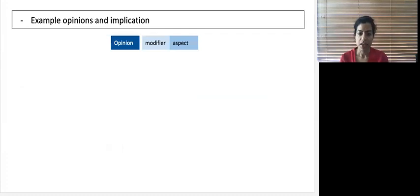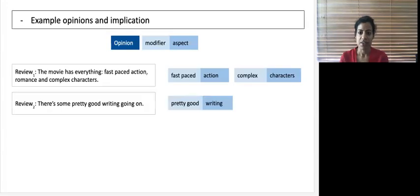So what do opinions and implications look like? Opinion is a tuple with a modifier and an aspect. An aspect is the target of an opinion such as action, characters, writing in movie reviews. A modifier is essentially a phrase that further describes this aspect. This could be fast-paced for action or pretty good for writing.